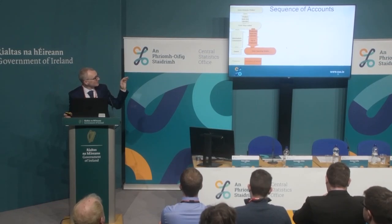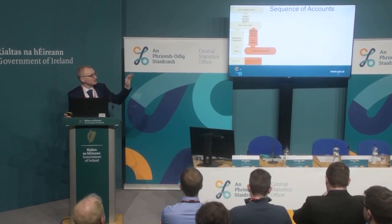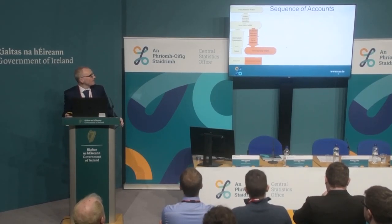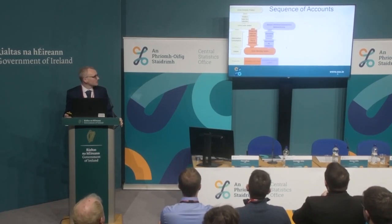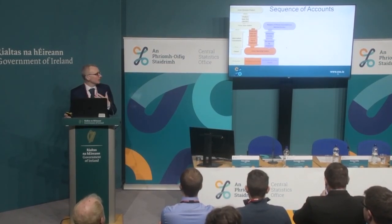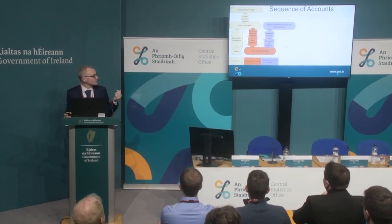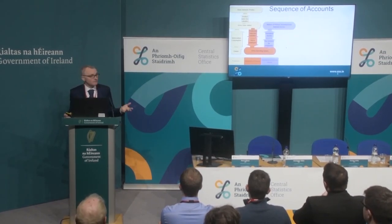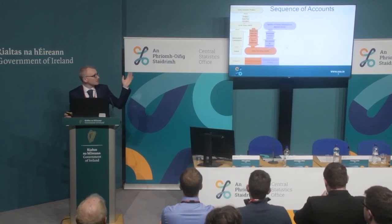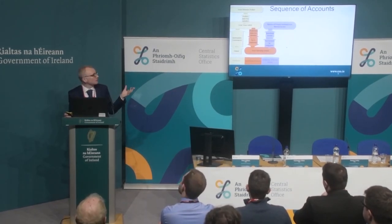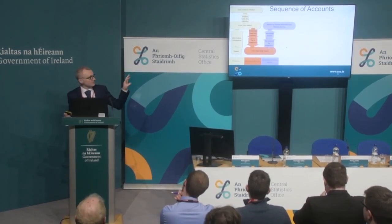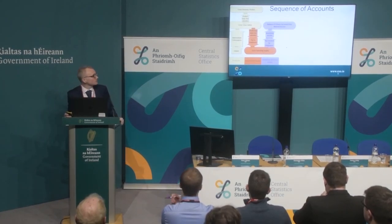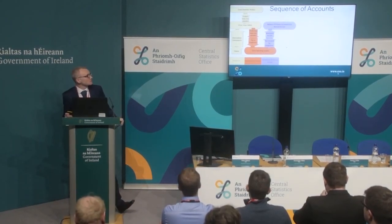In general, we talk about gross operating surplus plus compensation of employees as gross value added. That gross operating surplus is the start of the distribution of primary income account. In this account, we see the pay coming into the employees — households receive most of the pay, some of it goes to cross-border workers. Then you adjust for the investment income: interest, dividends, reinvested earnings, income on funds like pension fund income, and everything that you're paying out as well. That gives you the balance of primary incomes for each sector and the gross national income for the economy as a whole. Ireland's gross national income is largely affected by the investment income outflows as profits are flowing out to the owners of the foreign multinationals here.